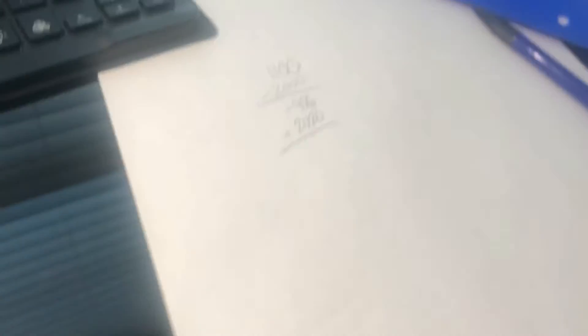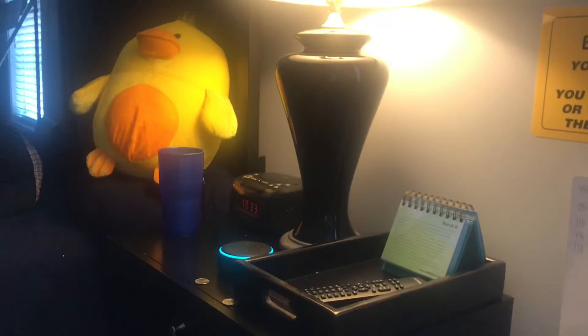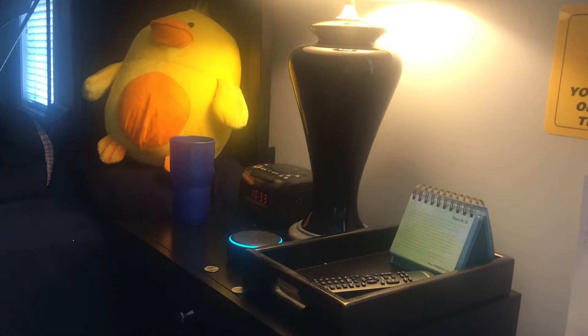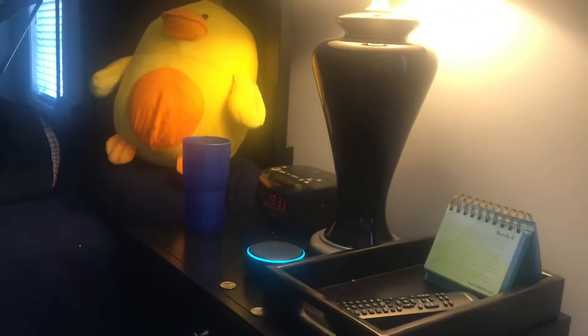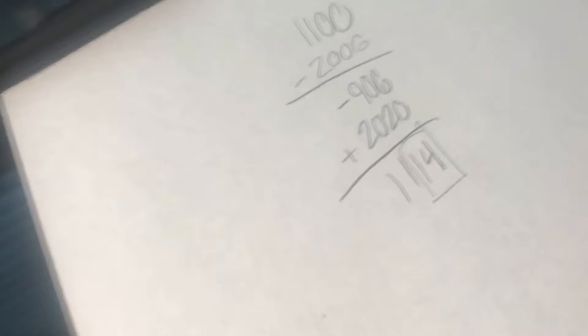I'm pretty good at math but the negatives are going to get me since we haven't been in school in like a week. So, Alexa, what's negative 906 plus 2020? That's 1114. The answer is 1114, and I am 14 years old — I just turned 14 a couple weeks ago. So that's kind of crazy, it did work!